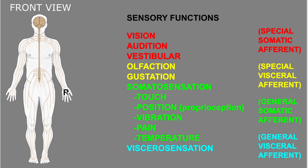Most types of sensory information are transmitted from the periphery of the body to the central nervous system via afferent axons in the peripheral nervous system. So for most senses, that information is going to travel along these afferent axons, bringing information into the central nervous system.